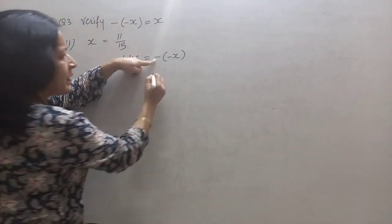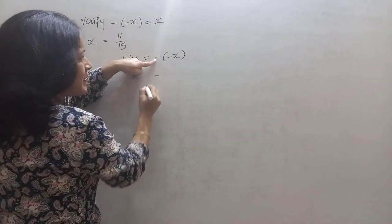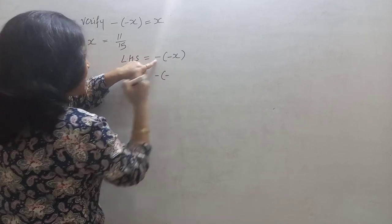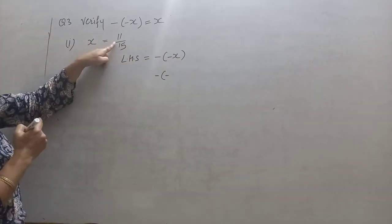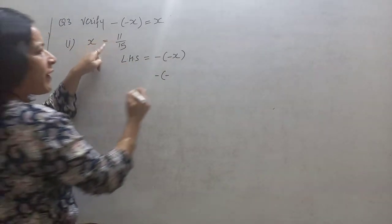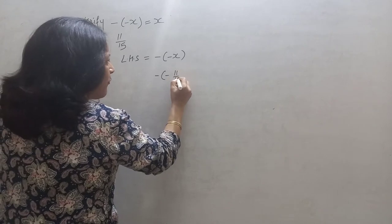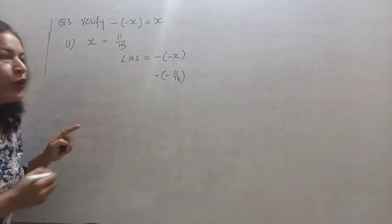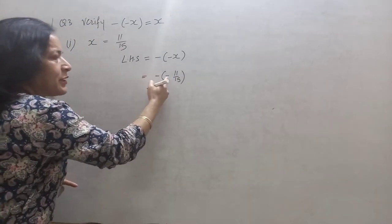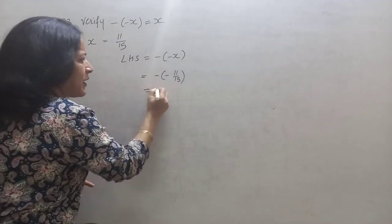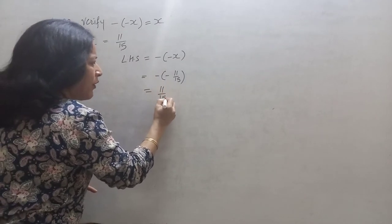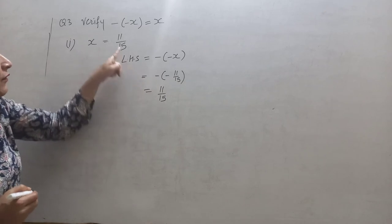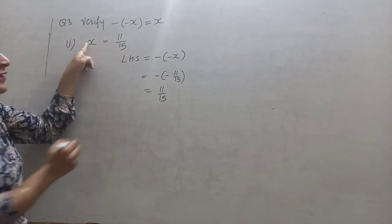Taking the left hand side: minus of minus x. This first minus as it is, bracket, this second minus as it is, now put the value of x, which is 11 upon 15. And you know that minus into minus equals plus, so it will be 11 upon 15.